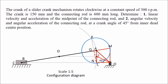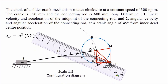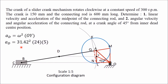AD = ω² × OY × scale. Measuring OY ≈ 24 mm: acceleration of D = 31.42² × 24 × 5 / 1000 = 118.5 m/s².